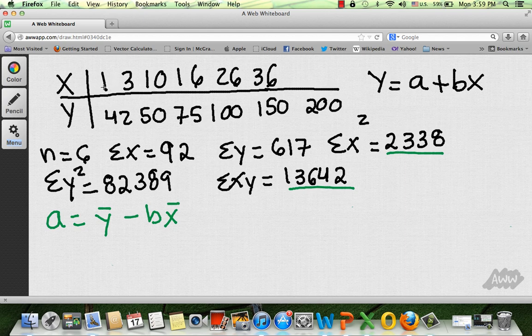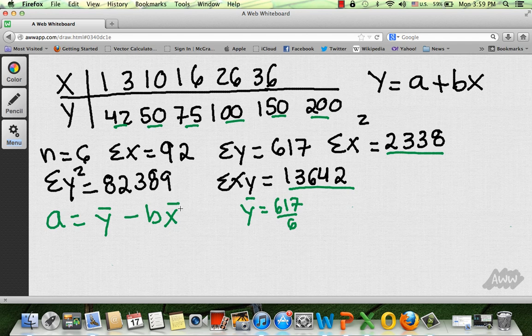And you're going to divide it by the number of items that you have. Well, 1, 2, 3, 4, 5, 6. We also have the sum of y. So, y bar is going to be 617 divided by 6. Can you guess what I'm going to do with x bar? It's going to be the same. It's going to be the sum of x, which is going to be 92 divided by 6.